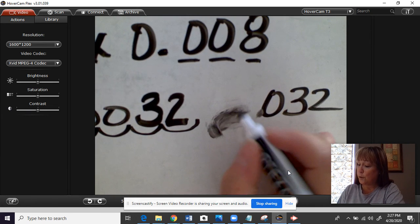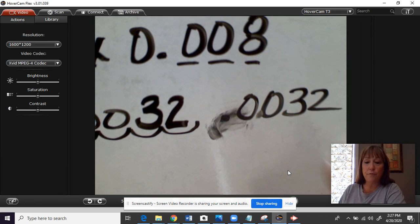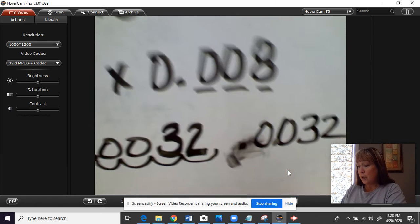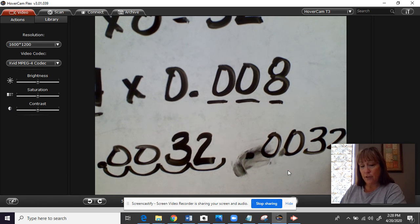That's kind of messy. Okay, we'll do 0.0032 is your answer. So you still have 32 in your answer, but now you are 4 places after the decimal.